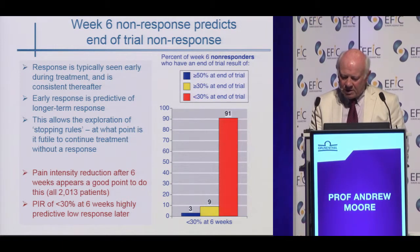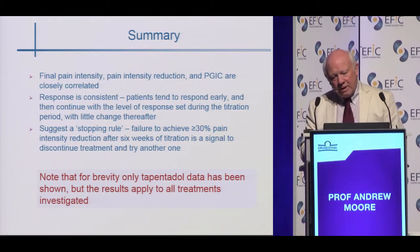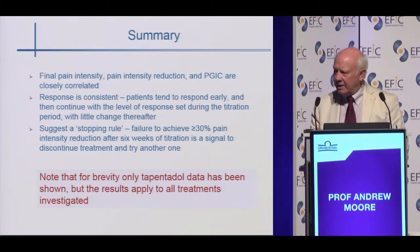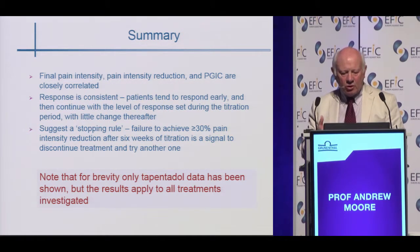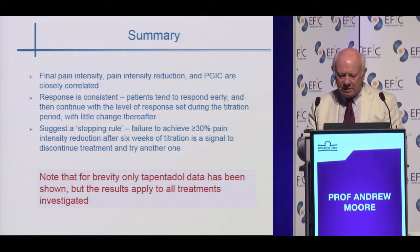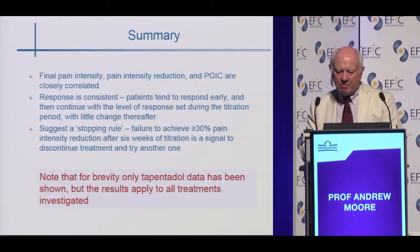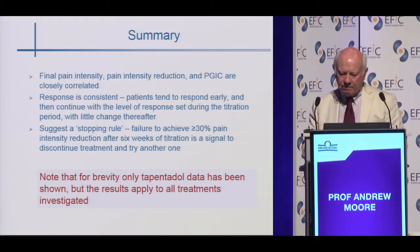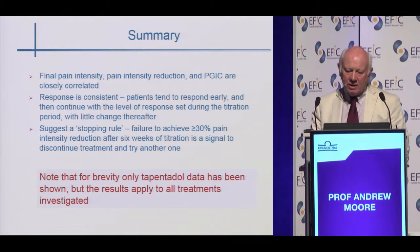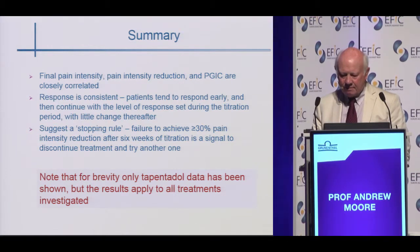In brief summary: final pain intensity, pain intensity reduction, and PGIC are all very closely related, and typically a patient who has one of those outcomes has all of them. The response is consistent — patients tend to respond early and then continue with the same level of response over the course of the study right until the end. We can suggest a stopping rule: failure to achieve at least 30% pain intensity reduction after six weeks of titration is a signal to discontinue treatment and try another one. Note that for brevity I've only talked about Tapentadol data, but these results apply to all the treatments in these studies. Thank you very much indeed.